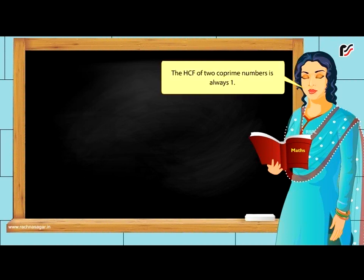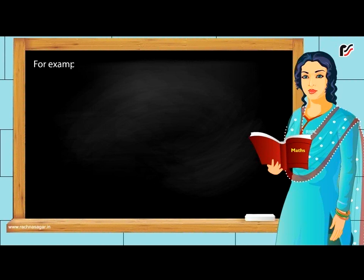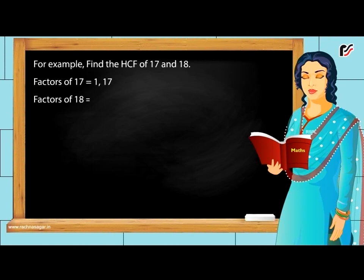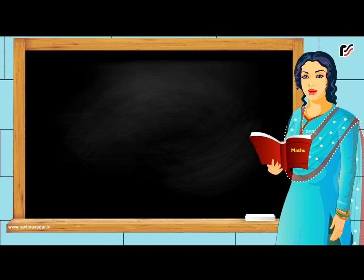The HCF of two coprime numbers is always 1. For example, find the HCF of 17 and 18. Factors of 17 = 1, 17. Factors of 18 = 1, 2, 3, 6, 9, 18. Common factor = 1. Hence, 17 and 18 are coprime numbers having HCF = 1.